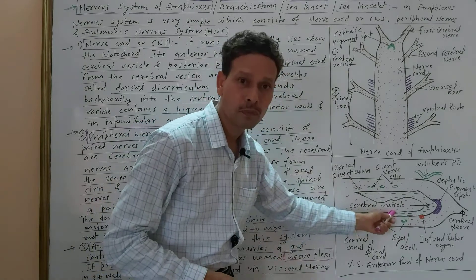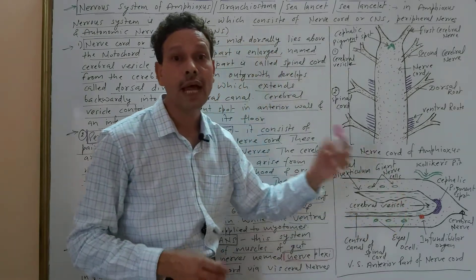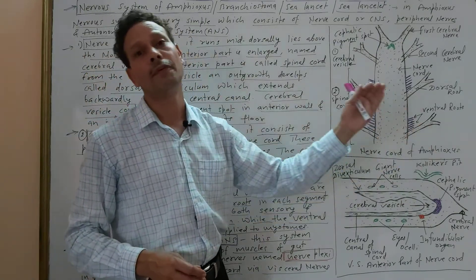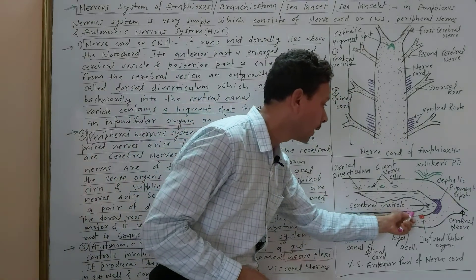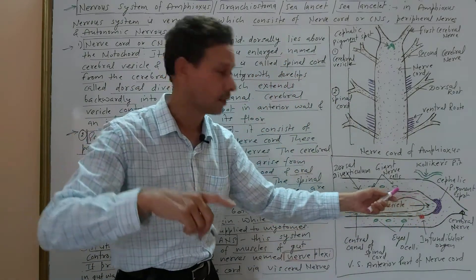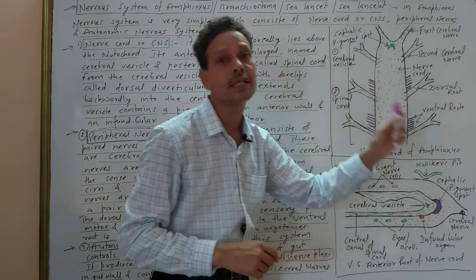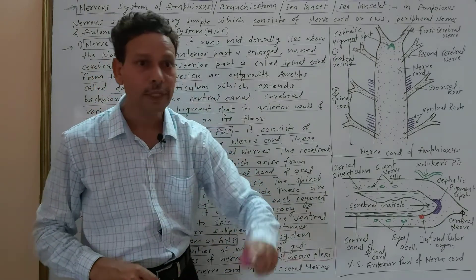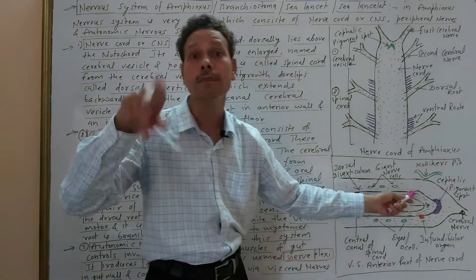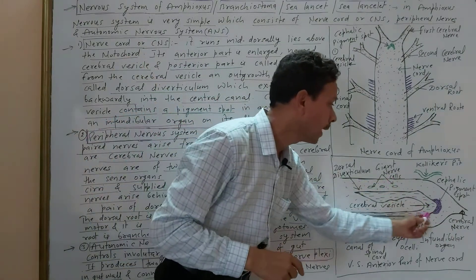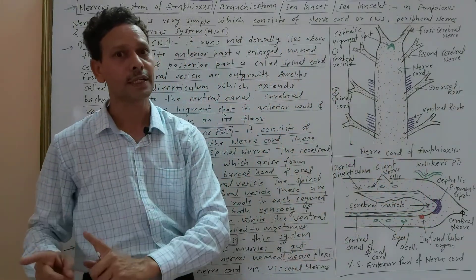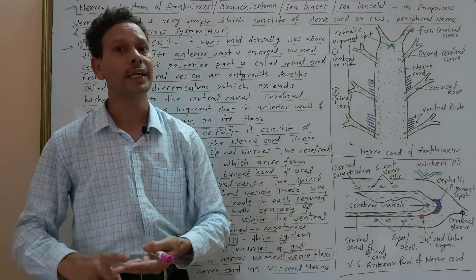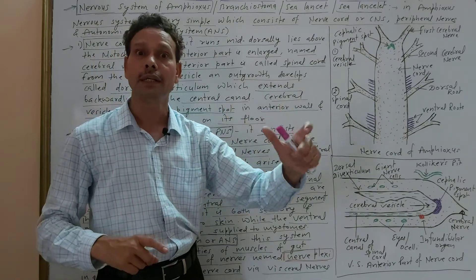Inside the spinal cord there is a central canal, and that central canal is filled with cerebrospinal fluid. This cerebrospinal fluid collects in the cavity of the cerebral vesicle. The enlarged anterior part of the nerve cord is the cerebral vesicle, and its cavity is equivalent to a ventricle — the single cavity of the brain.